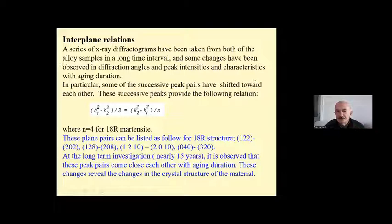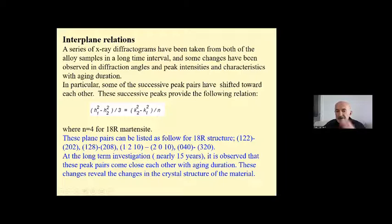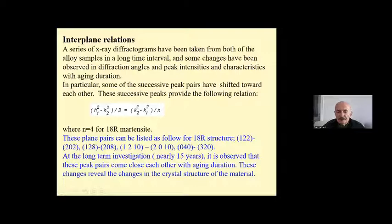A series of X-ray diffractograms have been taken from both alloy samples over a long time interval, and some changes have been observed in the diffraction angles, peak intensities, and peak characteristics with aging duration. In particular, some of the successive peaks have shifted with aging duration, and these successive peaks provide the following relation between Miller indices for 18R martensitic structures in copper-based shape memory alloys. The plane pairs can be listed as follows: (1,2,0), (1,2,8)/(2,0,8), (1,2,10)/(2,0,10), (0,4,0)/(3,2,0), and others. At long-term investigation, it is observed that these peaks come across each other with aging duration, and these changes refer to changes in the crystal structure of the material.